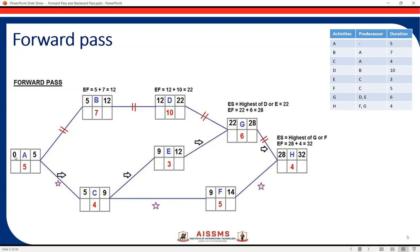To calculate the early finish, we add early start to the duration: zero plus five equals five. So the early finish is five for activity A. Now activity B and activity C are dependent on activity A. For activity B and activity C, the early finish of the predecessor acts as the early start of the next activity. So for B, the early start is five, and for C, the early start is also five.